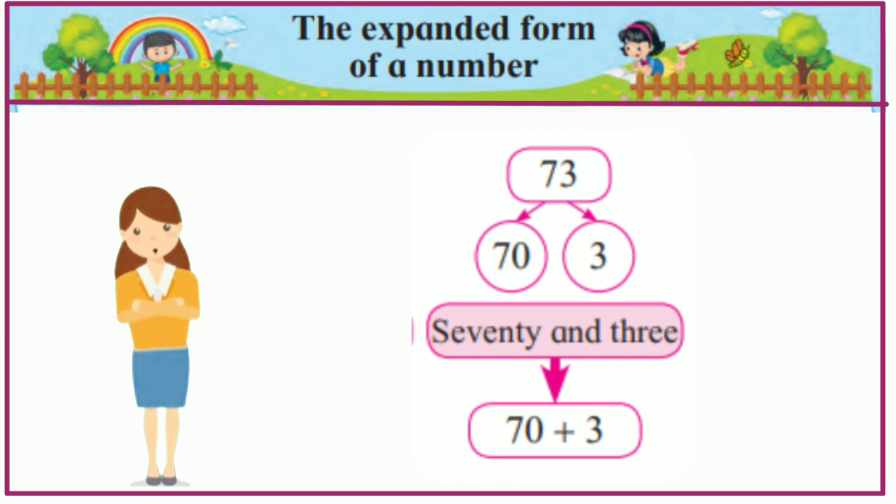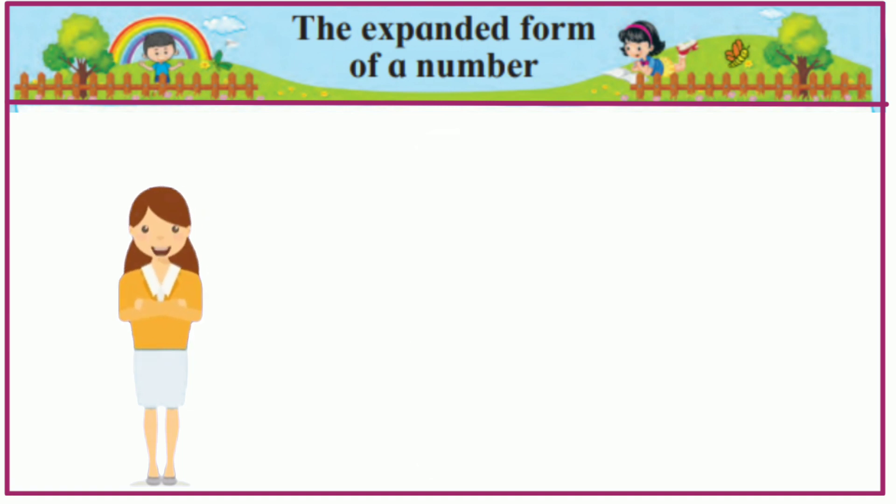73. The place value of 7 is 70 and the place value of 3 is 3. Means 70 and 3, so expanded form will be 70 plus 3.